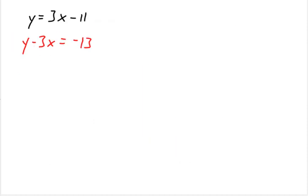Let's take a look at this one. So here, this top one is solved for y. So we'll use that information in equation two. So equation one, equation two. So we have, instead of writing y, I'm going to write 3x minus 11. Subtracting 3x equals negative 13.